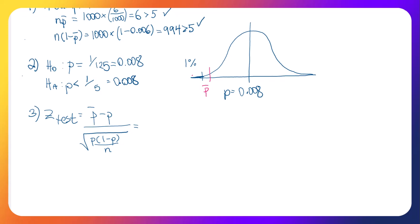Okay, so let's go and do that calculation. So p-bar, let's go figure out what that is. It turns out that it is the 6 defective parts out of the 1,000. That's 0.006. And p is the 1 in 125, which is the 0.008.